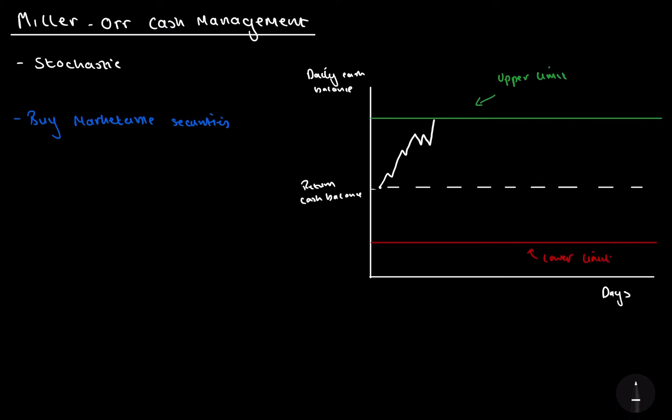When we see this, we'll buy. And obviously, if we buy marketable securities, our cash balance is going to fall. And we want to try and buy marketable securities worth the difference between the upper limit and the return point. And that will be represented on the graph like this, straight downwards. So what we have here is we've returned to our cash balance.